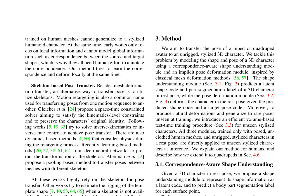This research paper presents a novel method for pose transfer between human meshes and stylized humanoid characters. The approach combines a correspondence-aware shape understanding module and an implicit pose deformation module to transfer poses without requiring human effort to annotate the correspondence. The shape understanding module predicts a latent shape code and part segmentation label of a 3D character in rest pose, while the pose deformation module deforms the character given the predicted shape code and a target pose code.